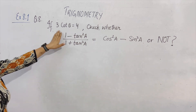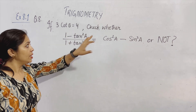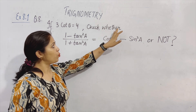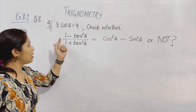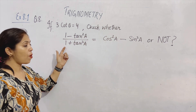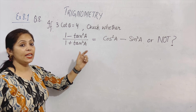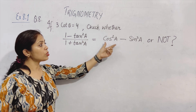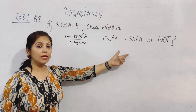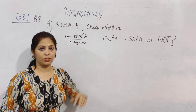If 3 cot theta is equal to 4, we can check whether 1 minus tan square A upon 1 plus tan square A is equal to cos square A minus sin square A or not.